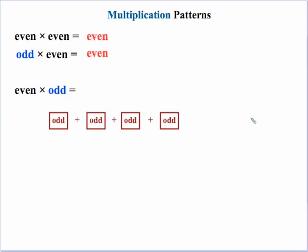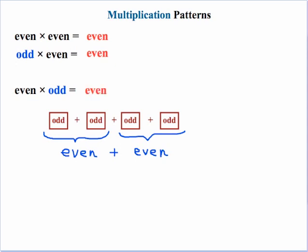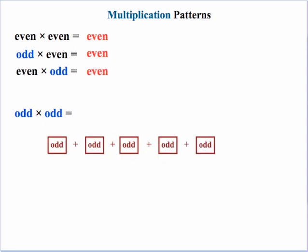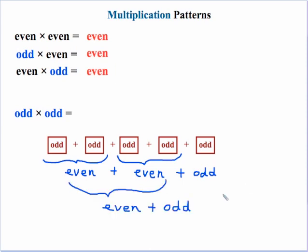For even times odd: each repeated number is an odd number and we have an even number of those. When we combine two odds, we already know that gives an even sum. So we will still get an even result. And last, odd times odd: our groups are all the same odd number and we have an odd number of those. Combining odds with odds gives even sums, but at the end — no matter how many iterations — we end up with an even number plus an odd number, which results in another odd.